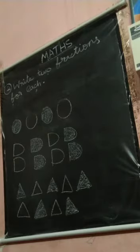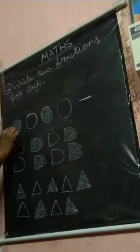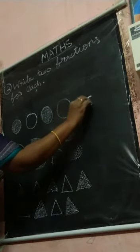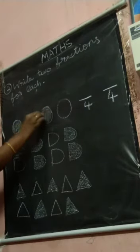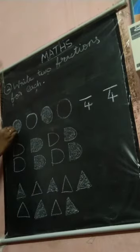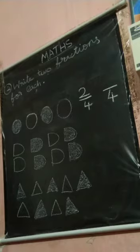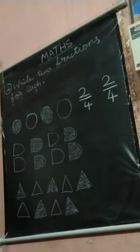Write 2 fractions for each. How many objects are there? 1, 2, 3, 4. You are going to write 2 fractions. First, how many balls are shaded? Count and write — 1, 2. Two objects are colored. How many objects are not colored? Count and write — 1, 2. The first question: the 2 fractions are 2 by 4 for shaded objects and 2 by 4 for not shaded objects.